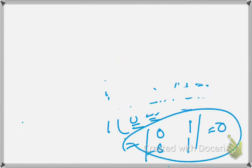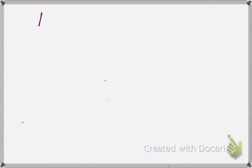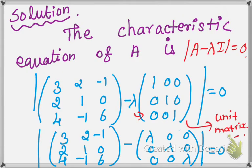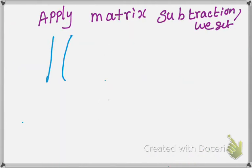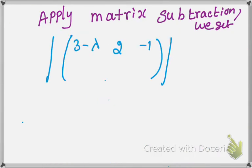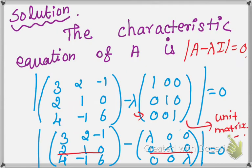Apply matrix subtraction. We get: first row: (3-λ), (2-0)=2, (-1-0)=-1. Second row: (2-0)=2, (1-λ), (0-0)=0. Third row: (4-0)=4, (-1-0)=-1, (6-λ). So A - λI = [(3-λ), 2, -1; 2, (1-λ), 0; 4, -1, (6-λ)].